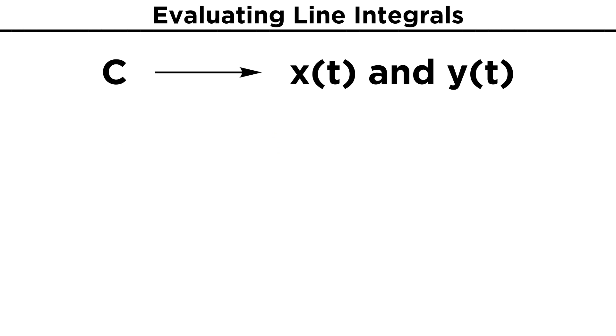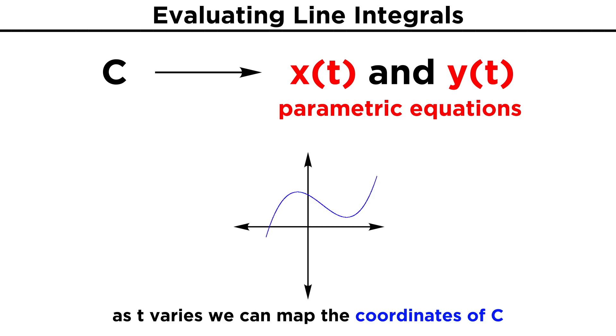In order to calculate line integrals by hand, it is often necessary to be able to express the curve C as two separate equations, one for x and one for y, that both depend on a new variable t. As we have learned in a previous tutorial, x of t and y of t are referred to as parametric equations, and as t varies, the x and y coordinates of the curve they form will be mapped out.